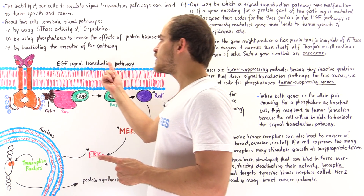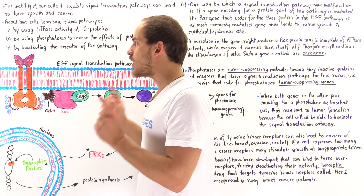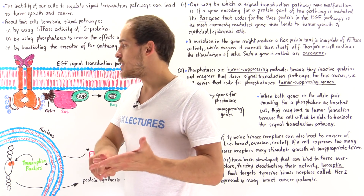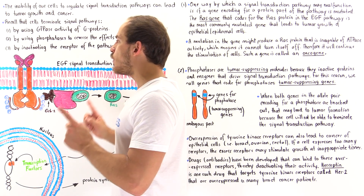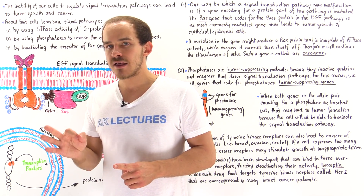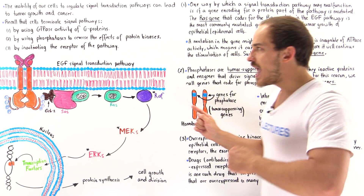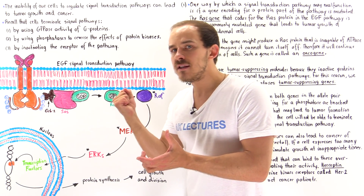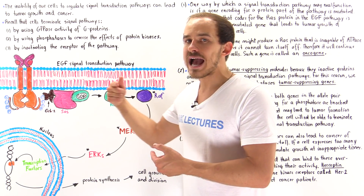This process — the EGF signal transduction pathway — stimulates cell differentiation, cell growth, and cell proliferation of two types of cells: epidermal cells and epithelial cells. Once this pathway carries out its specific purpose, how does a normal cell terminate this process? There are three major methods.